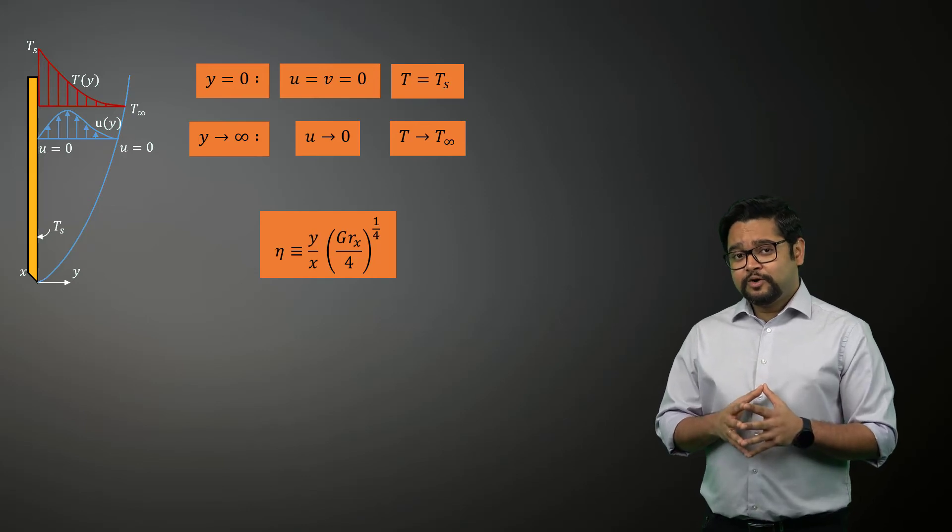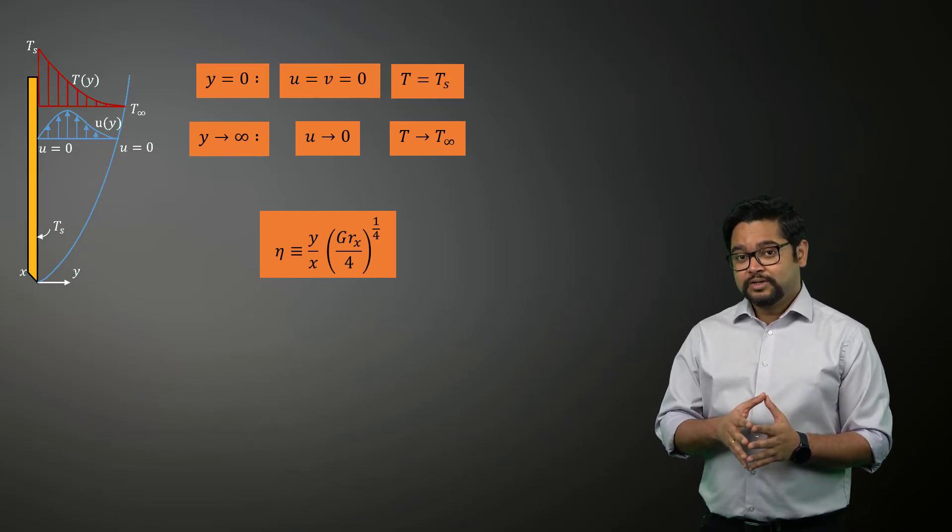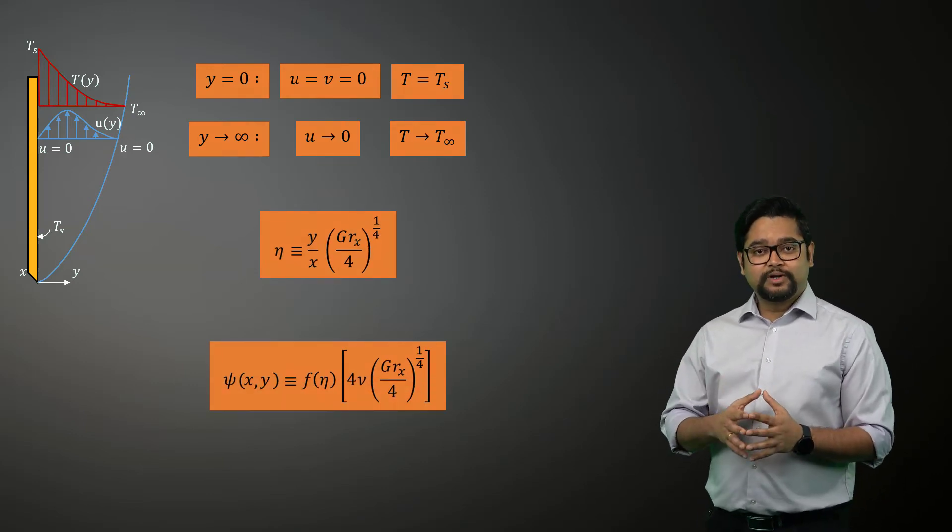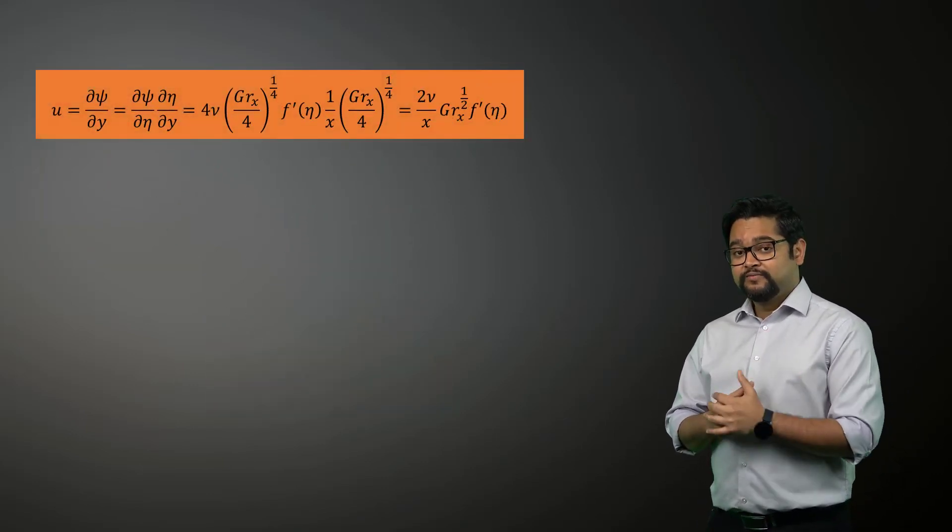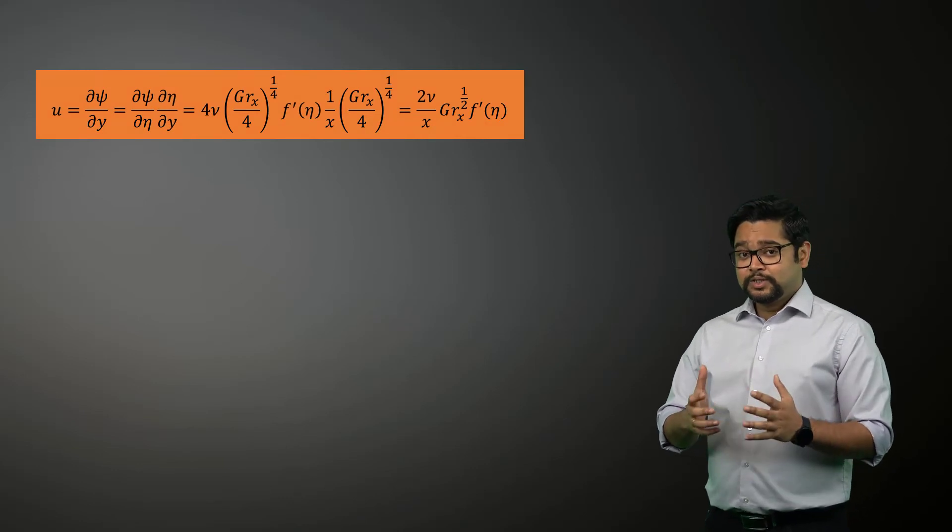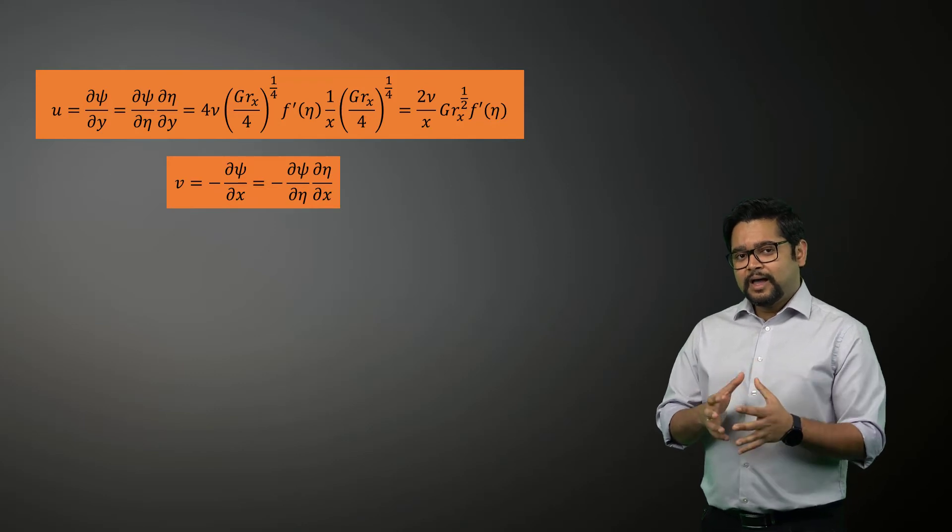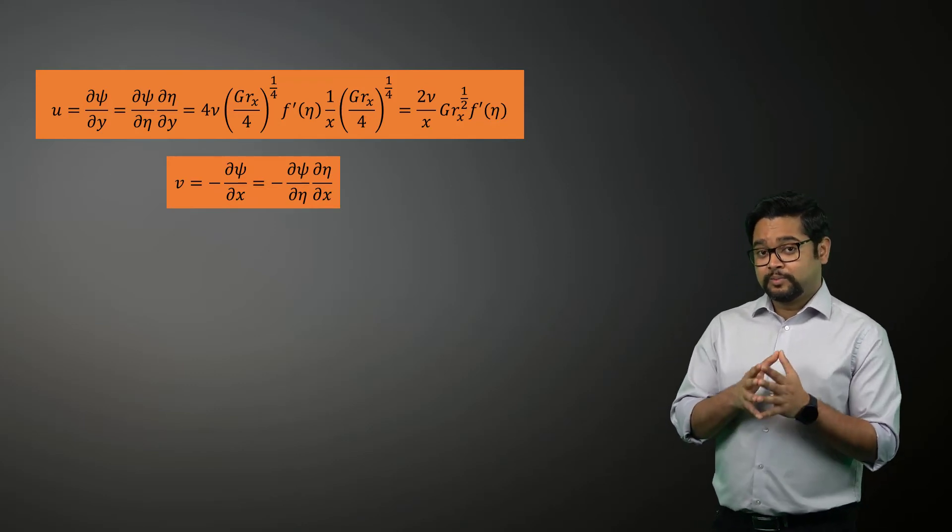The velocity components can be defined in terms of stream function as shown here. Now we can write the x component of the velocity using the stream function like this. Similarly, we can compute the y component of the velocity as this.